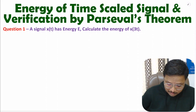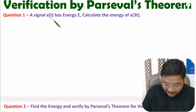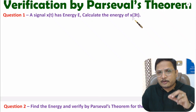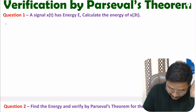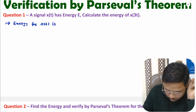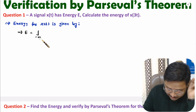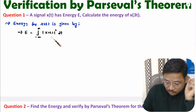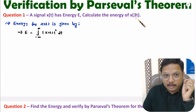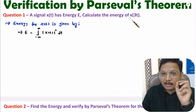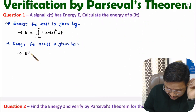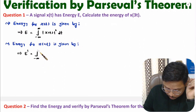If you observe the first question, for signal x(t) the energy is E, and we need to identify the energy for x(3t). First I will explain the generalized calculation. The energy for x(t) is E, which equals the integration from minus infinite to plus infinite of the square of the signal. We need to identify energy for x(3t), so for the generalized calculation I will consider x(at). For signal x(at), the energy E' will be the integration from minus infinite to plus infinite of the square of x(at).